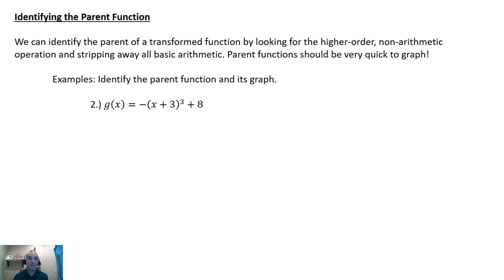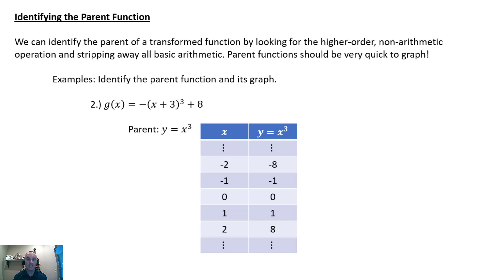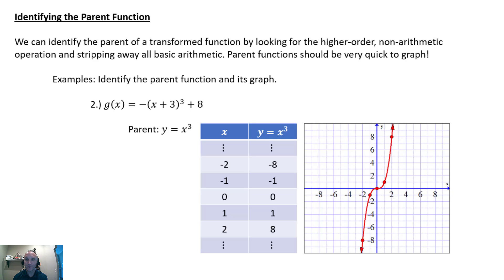Let's do another one: g(x) = negative quantity (x + 3) cubed, plus 8. Strip away all the arithmetic and what's left is x cubed — that's our parent function. The high-order operation here is the cube operation. To graph this, plug in several X values — some negatives, zero, some positives — cube them to get the Y values, and you get the y = x³ function.